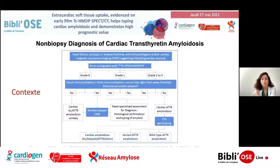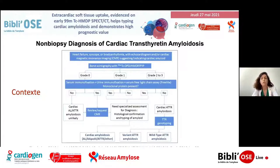Le contexte, c'est celui-ci. Vous connaissez tous cet algorithme qu'on utilise en pratique quotidienne pour le diagnostic différentiel entre les amyloses AL et à transthyrétine, les deux principales les plus fréquentes, avec cette scintigraphie osseuse et la recherche de gammapathie monoclonale. En fonction de la présence ou non de gammapathie, on va soit à la preuve histologique pour l'amylose AL, soit, en absence de gammapathie avec une fixation sur la scintigraphie osseuse, poser le diagnostic d'amylose à transthyrétine.